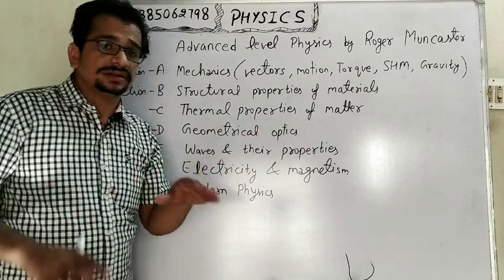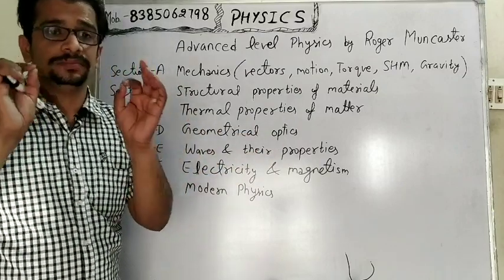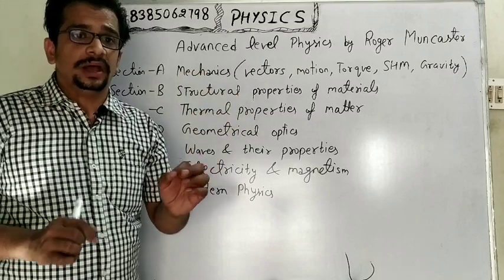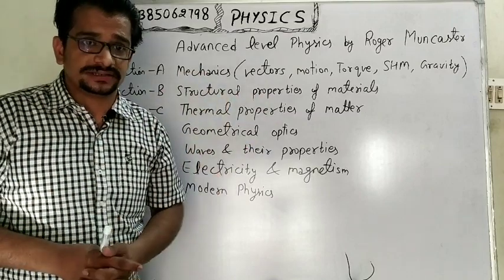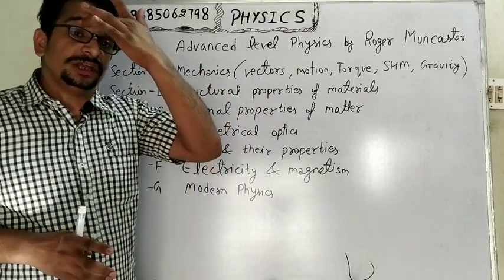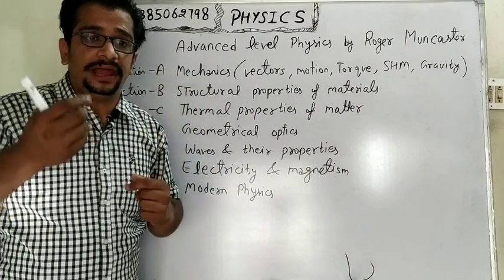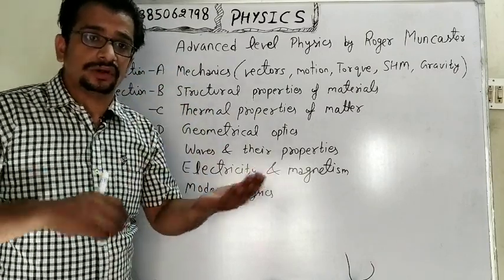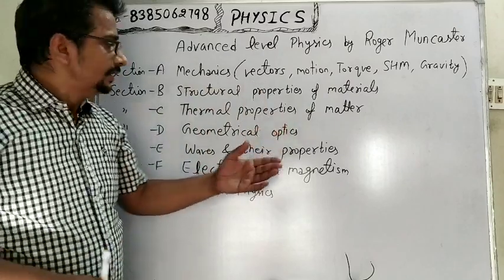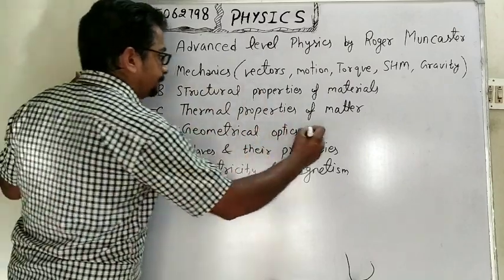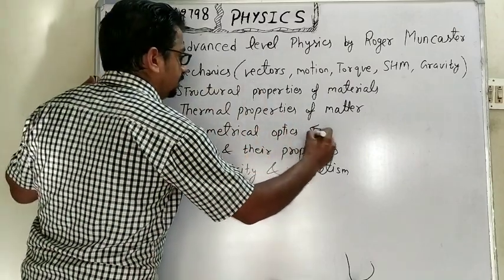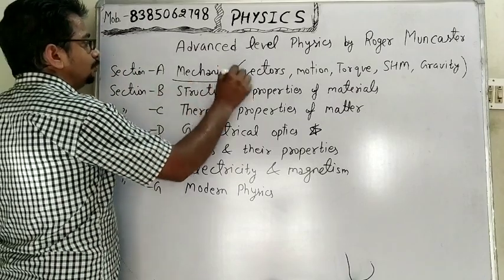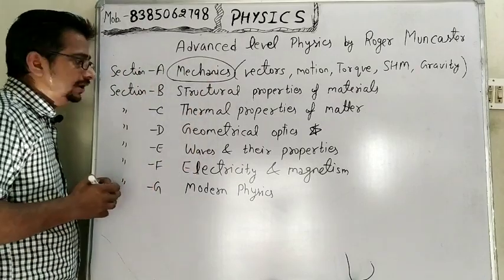The fourth section is geometrical optics. This section consists of lenses, mirrors, telescopes, microscopes, and other optical instruments. We will study how an image is formed at our retina after reflection or refraction. This part is very important for competitive exams.